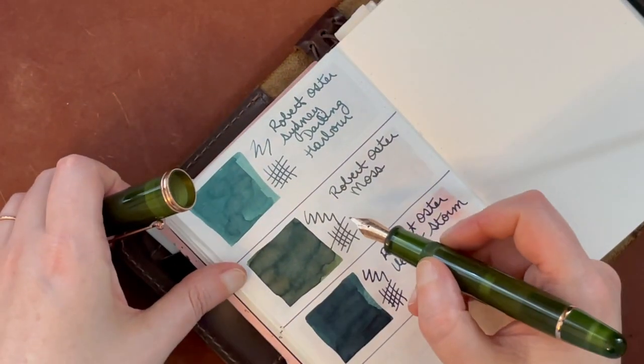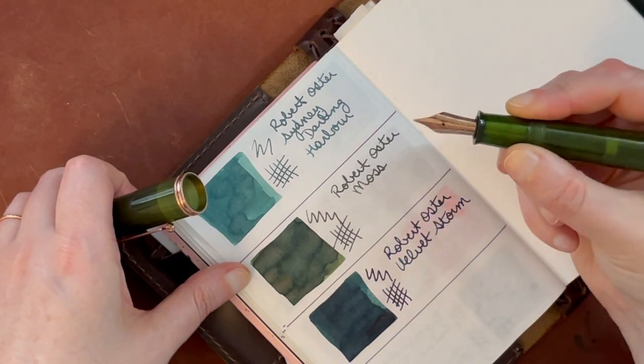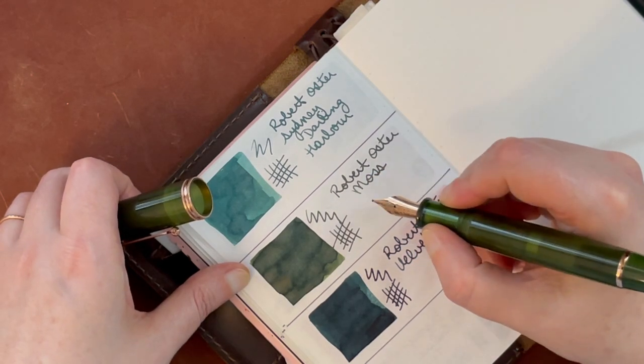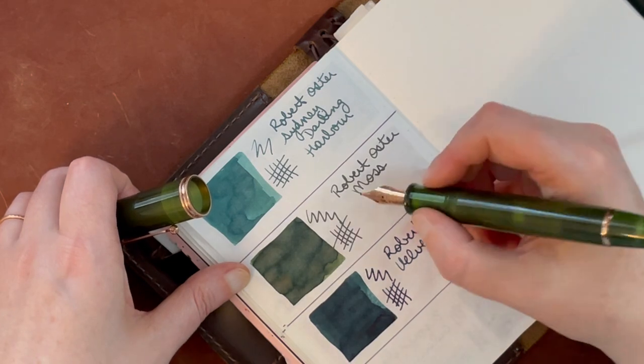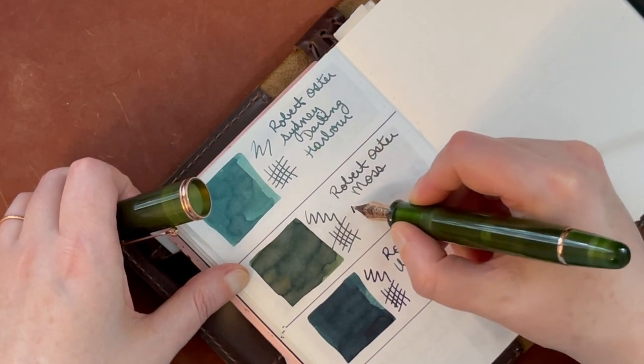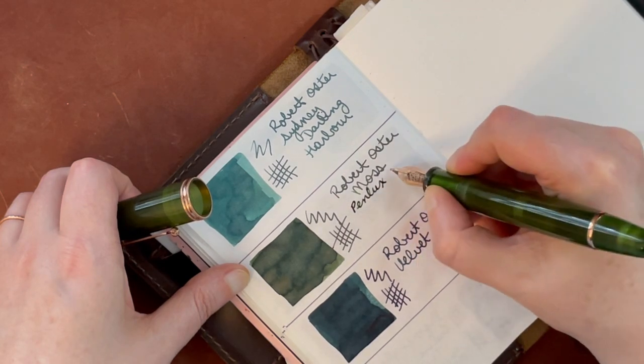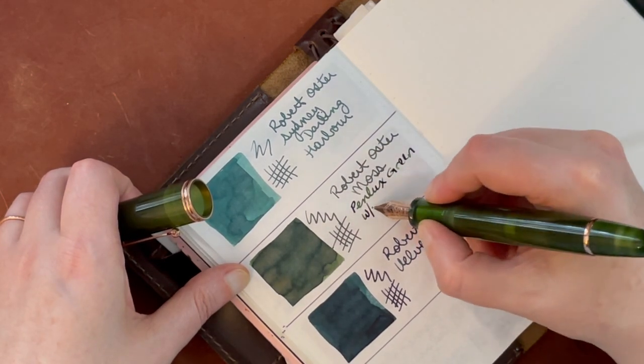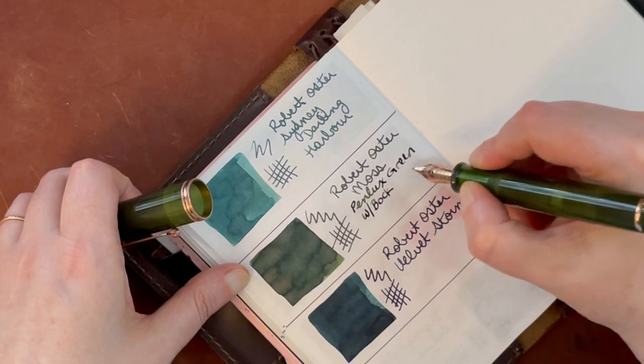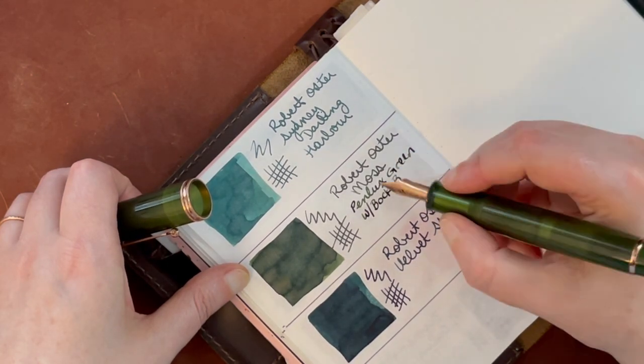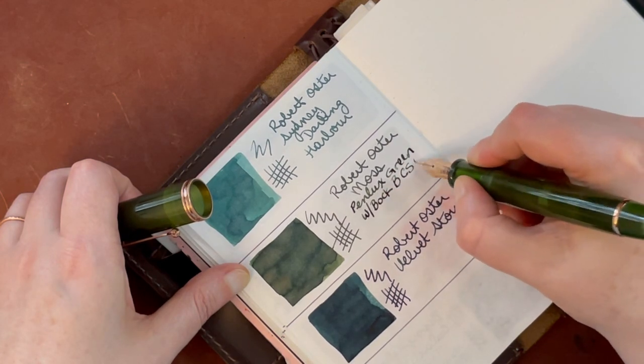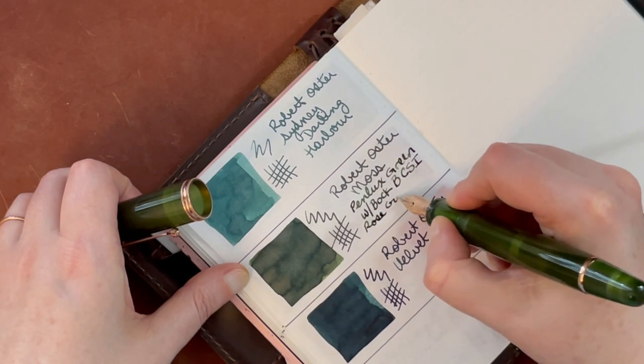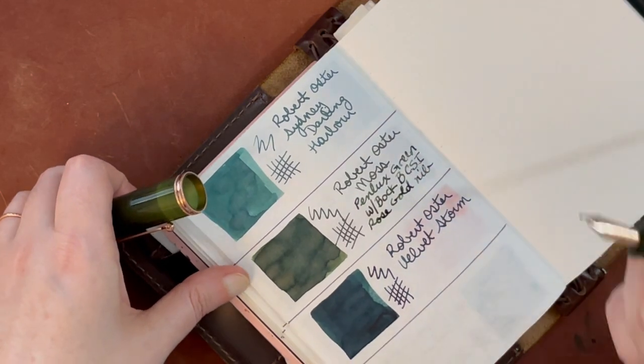So this pen has Robert Oster Moss in it. And this is a broad Bock rose gold nib, which is beautiful in its cursive smooth italic, basically a CSI. So if you see that, that's what it is. And this is Penlux. I'm just going to call it the Penlux green. And I try to do cursive and block lettering with a Bock bold CSI rose gold nib. So that's lovely.